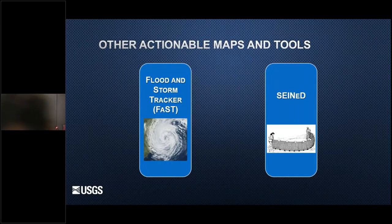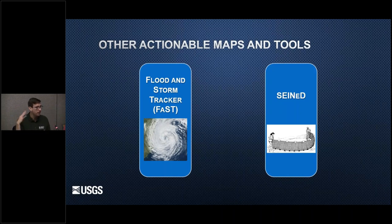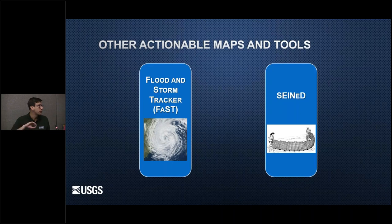A couple of other analytical maps and tools not developed through this grant program are worth mentioning briefly. One is called FAST — the Flood and Storm Tracker. This is similar in scope to the Alert Risk Mapper, where we do assessments after a hurricane or major storm. We look at flooding, rainfall, and high-water mark data to assess if there are any potential lateral connections across HUC-based drainages, and where that might have provided a corridor for taxa to expand from one drainage to a new drainage where it hasn't previously been seen.